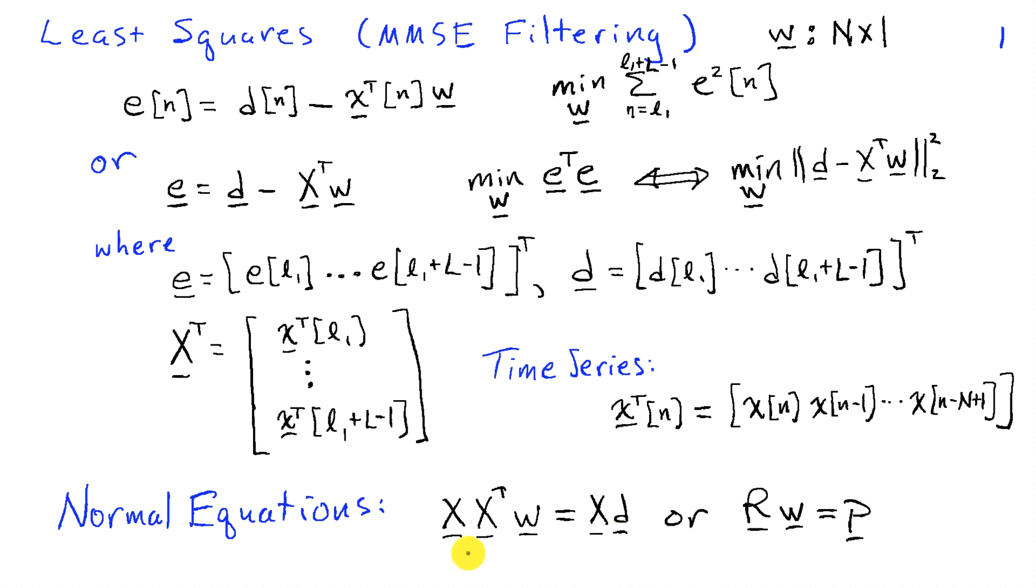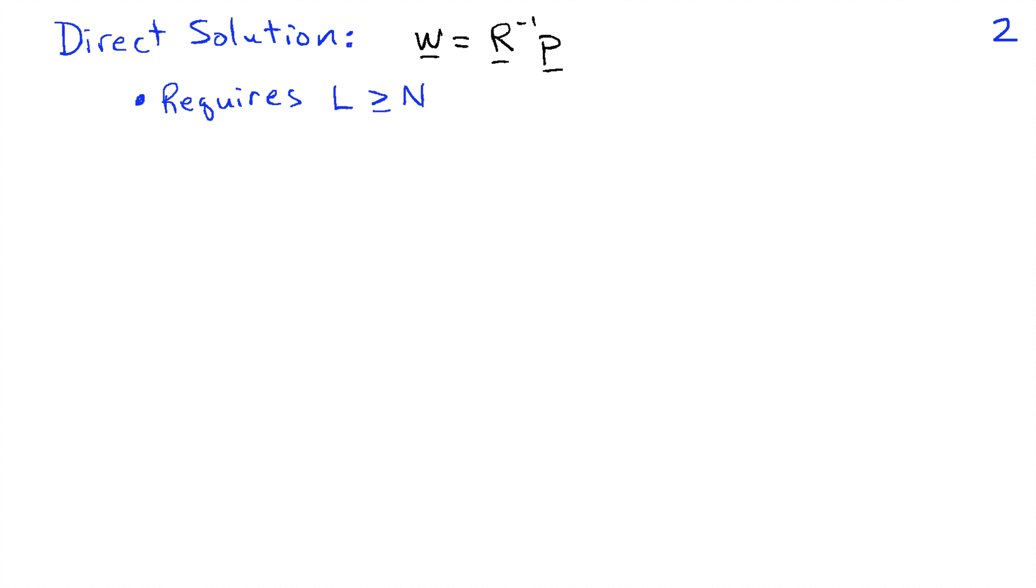The solution to this problem of minimizing the squared error was obtained using the normal equations, which, if we write in terms of X, it's X times X transpose w equals X transpose d. Or we had defined an R and a p corresponding to X times X transpose and X times d, and that was another way of writing the normal equations. So the direct solution to the normal equations is w equals R inverse times p.